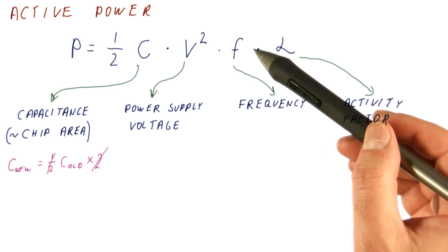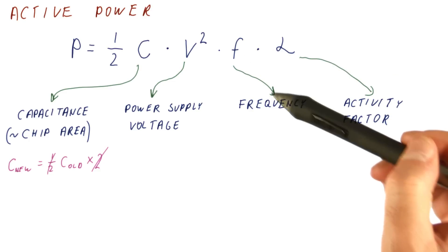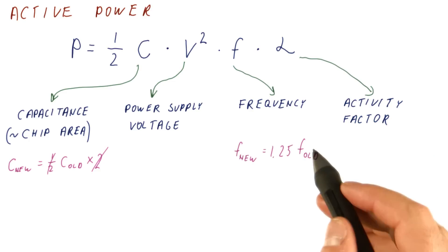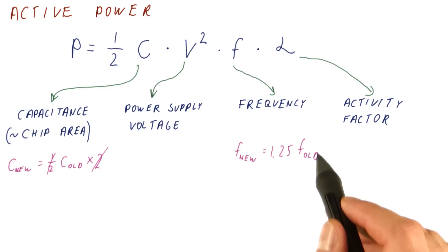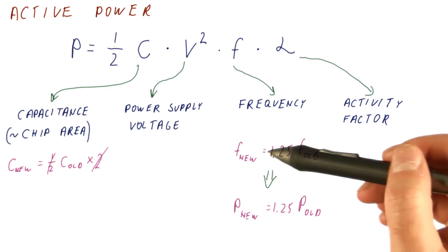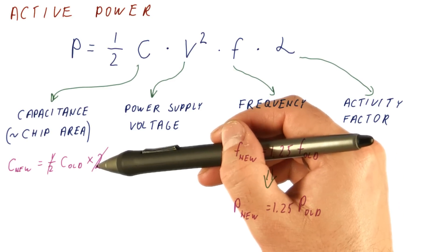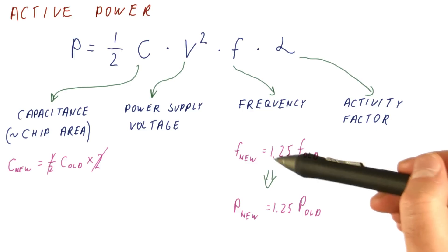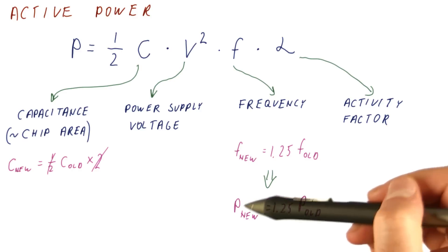In reality, smaller transistors are going to be faster so we can increase the clock frequency of the processor too. So let's say that the new clock frequency is 25% higher than the old one. That increases the power consumed. So it's now twice as fast because of the number of cores. Another 25% improvement because of this, but the overall power consumption is now higher.